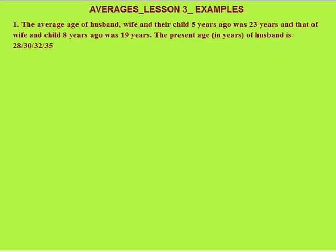Hello, this is Averages Lesson 3. In this lesson I will discuss more examples on averages, focusing mostly on age-based questions. These questions are solved in a slightly different way than the questions we solved in the previous lessons. The first question: the average age of a husband, wife, and their child was 23 years five years ago, and that of wife and child eight years ago was 19 years. We need to find the present age of the husband.